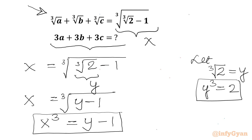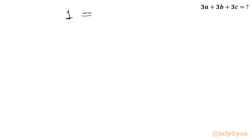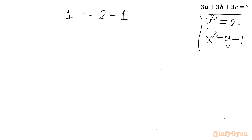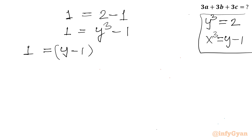Now for algebraic manipulation: can we write 1 as 2 minus 1? Yes. And 2 is y³, while x³ = y minus 1. So I will write 1 = y³ minus 1. Now applying the a³ minus b³ formula: 1 = (y minus 1)(y² + y + 1).